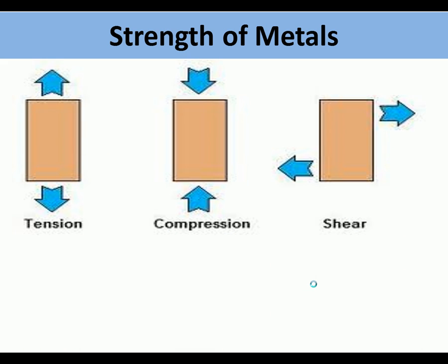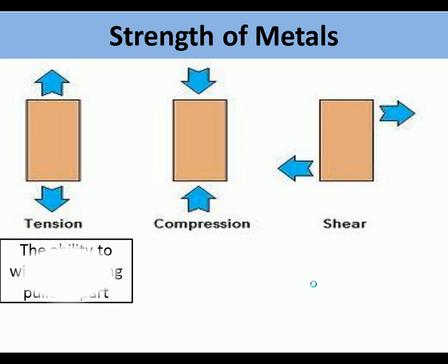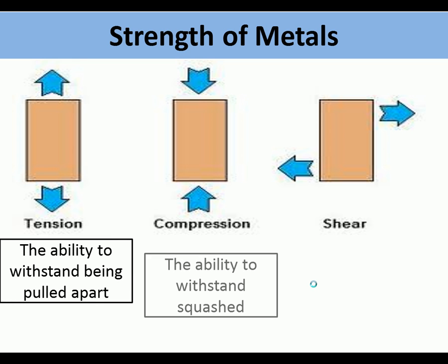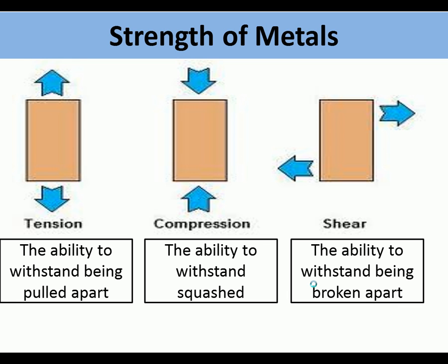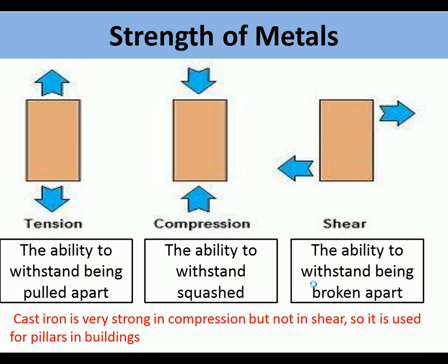The strength of metal is often measured in tension — being pulled or pulled apart — compression, which is the ability to withstand being squashed, and shear, the ability to withstand being broken apart. Cast iron is very strong in compression but not strong in shear, so it's often used in pillars in buildings because it is then only under compression.